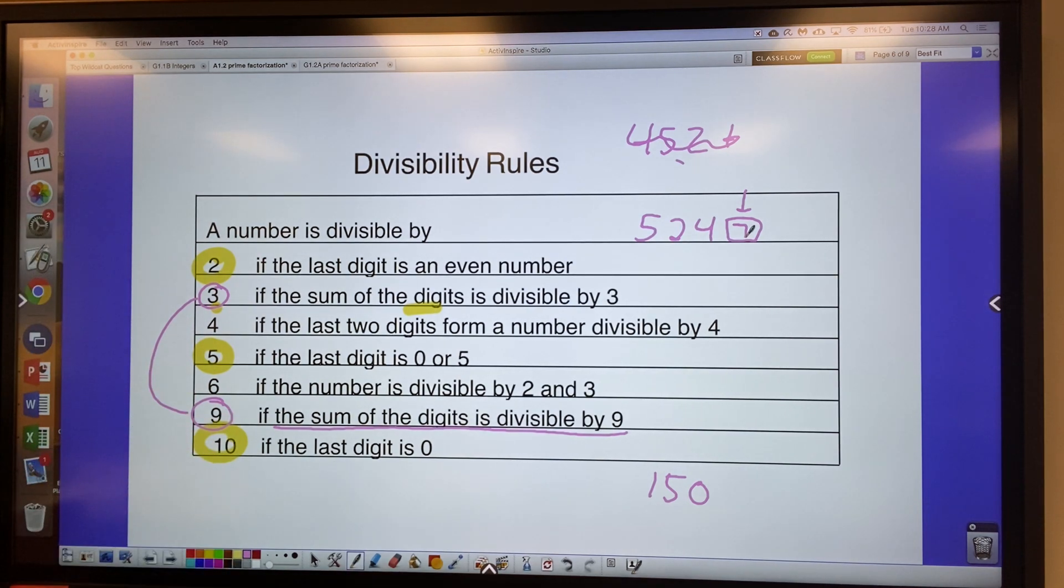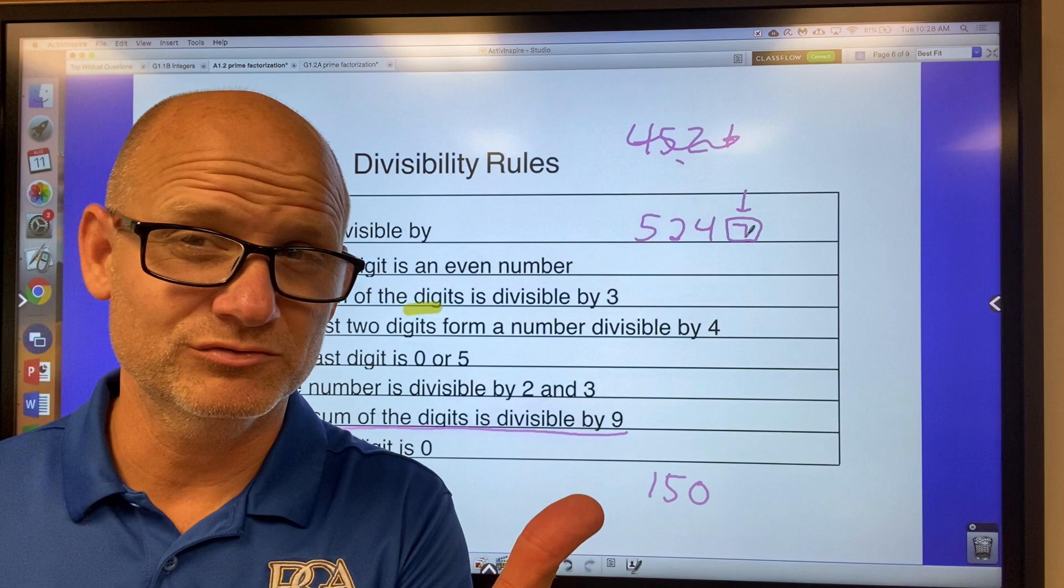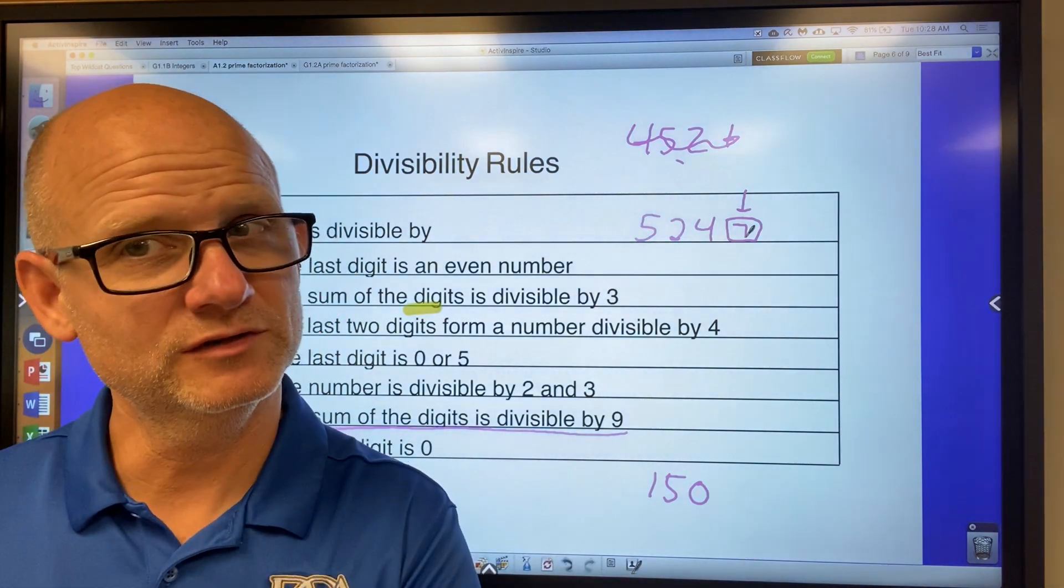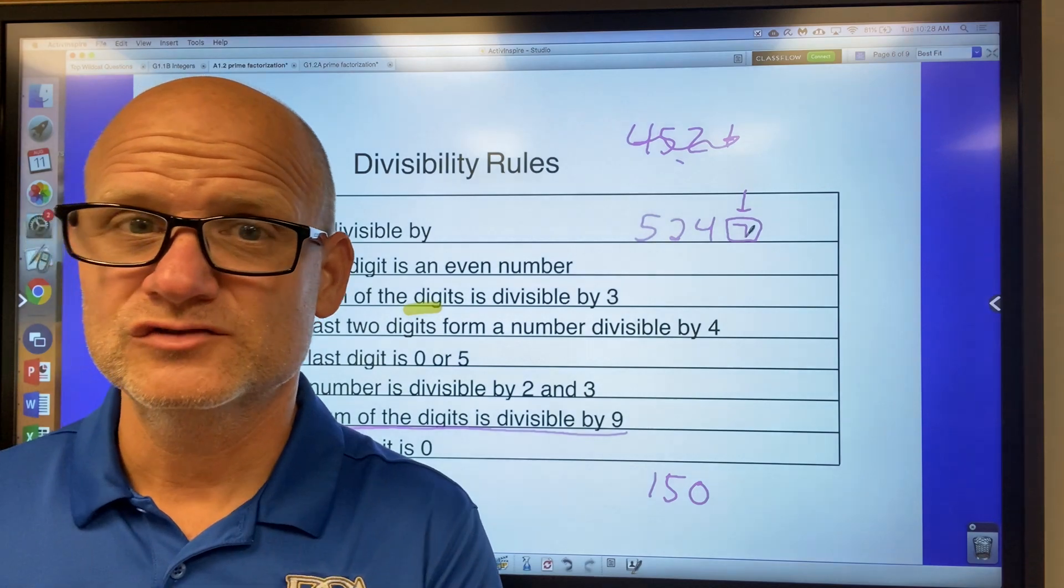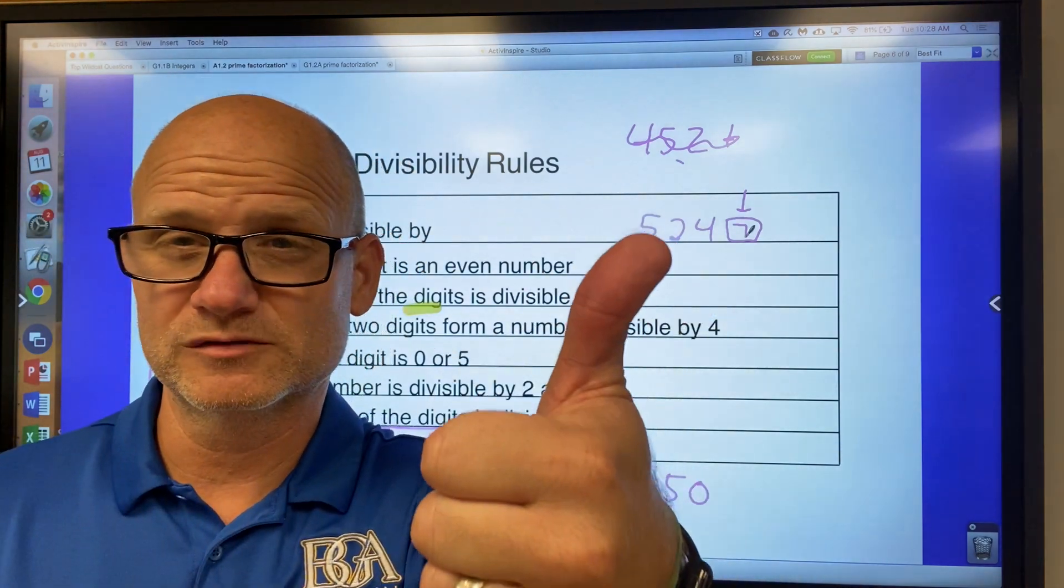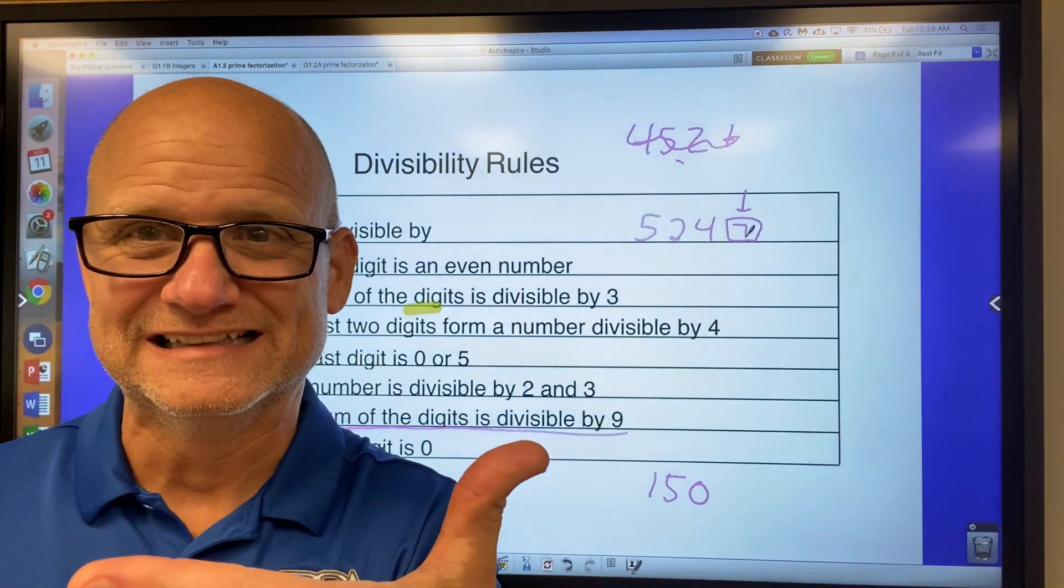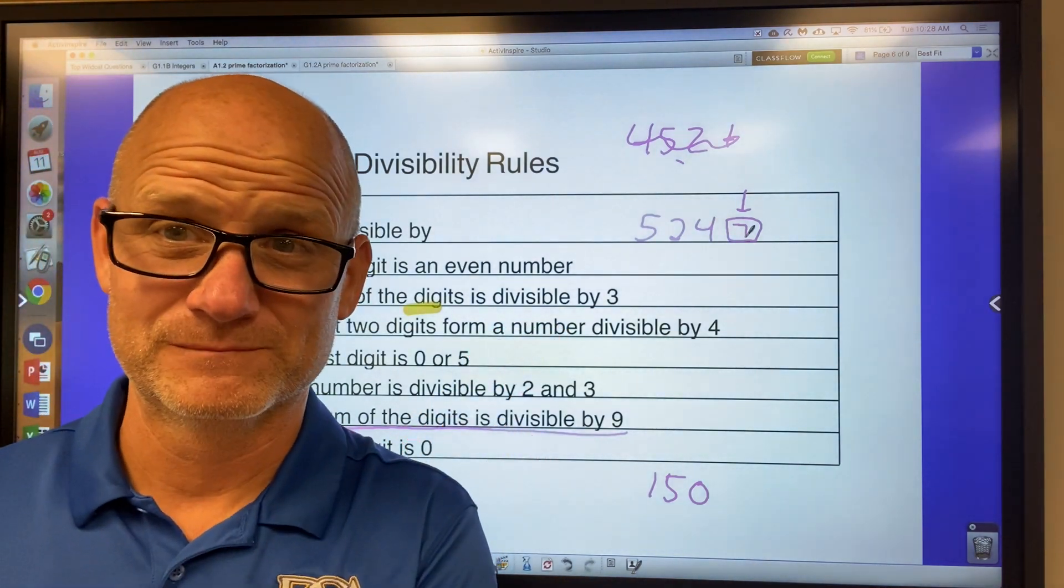And then 6, hey, if a number is divisible by 2 and divisible by 3, it's divisible by 6. Divisible by 2, divisible by 3, then it's divisible by 6. So if you say, yes, this number is divisible by 2, and you say, yes, this number is divisible by 3, then guess what you're saying? Yes, it's divisible by 6. Okay?